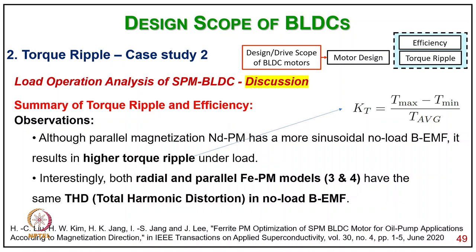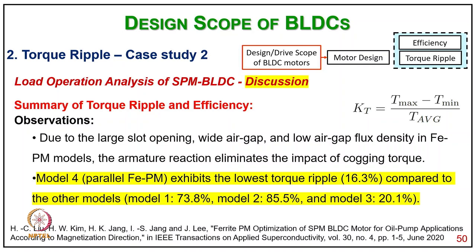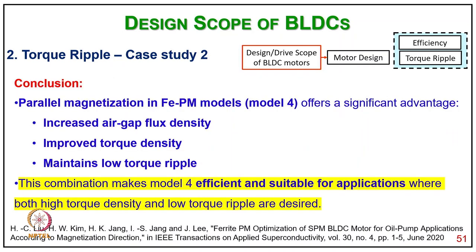Summary of torque ripple and efficiency: although parallel magnetization NDPM has a more sinusoidal back EMF, it results in higher torque ripple. Both radial and parallel FEPM models 3 and 4 have the same THD under no-load. FEPM model 4 exhibits the lowest torque ripple at 15.3%, compared to model 1 at 173%, model 2 at 173.8%, and model 3 at 20.1%. The conclusion is that parallel magnetization FEPM model 4 offers significant advantages of increased air gap flux density, improved torque density, and maintained low torque ripple, making it suitable for applications requiring both high torque density and low torque ripple.